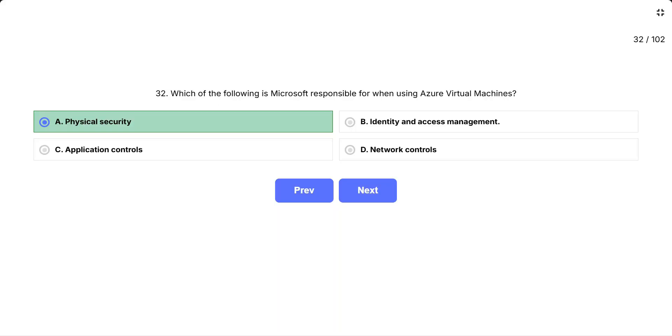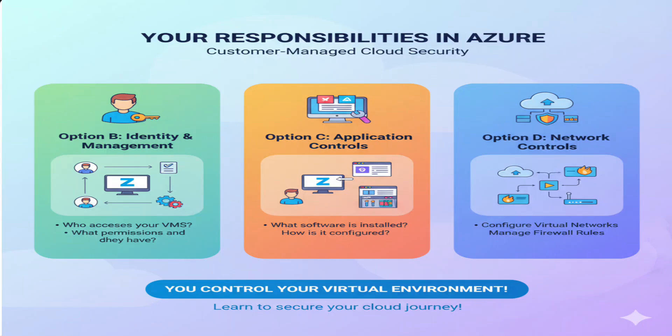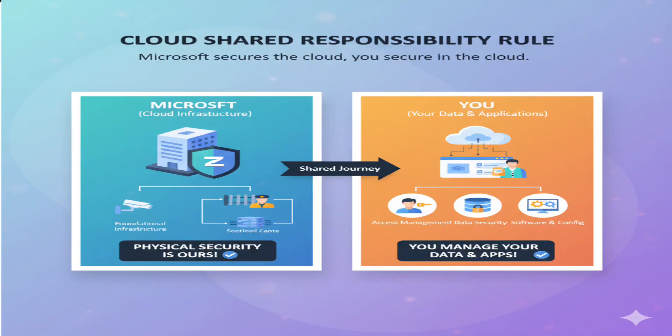Why the other options are your responsibility: Option B, Identity and Access Management — you decide who can access your VMs and what permissions they have. Option C, Application Controls — you choose what software to install and how to configure it. Option D, Network Controls — you configure your virtual networks, security groups, and firewall rules. Remember the rule: Microsoft secures the cloud infrastructure; you secure what you put in the cloud.